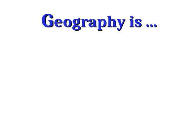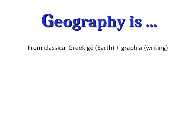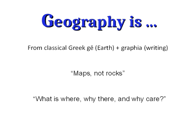At the college level, the discipline of geography comes from the classical Greek 'ge,' meaning Earth, and 'grapheia,' meaning writing. We sometimes describe it as maps, not rocks, to differentiate it from geology. But the best definition of geography as an academic discipline is: what is where, why there, and why care?